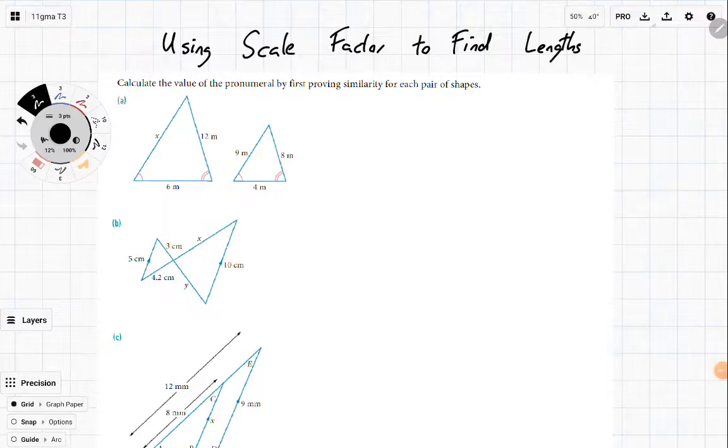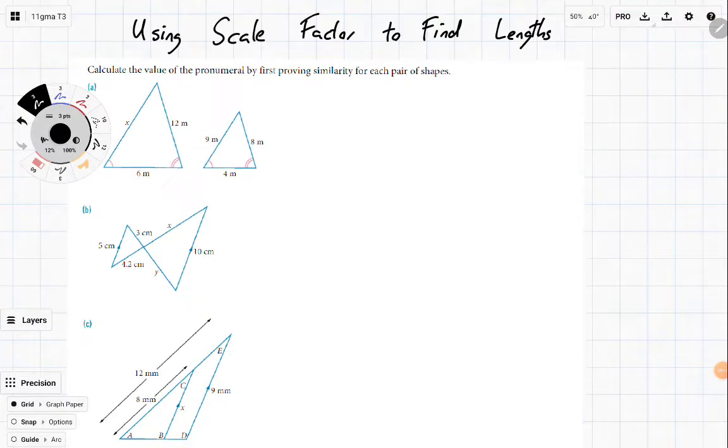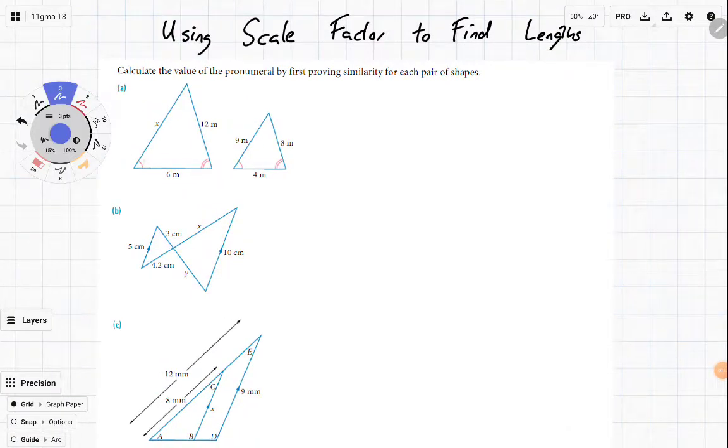Now for the first one it's a very quick one. You can see here we've got a matching angle here and we've also got a matching angle here. Therefore by AA since they're triangles these are similar.